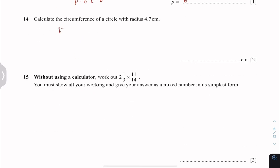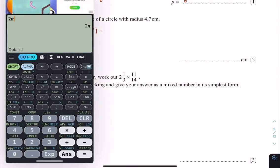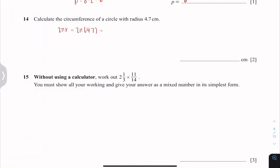Moving on to question 14. 2πr is the formula for the circumference of the circle. So you just simply substitute the radius given. And that is giving me 29.53 which is 29.5 cm when rounded to 3 significant figures.